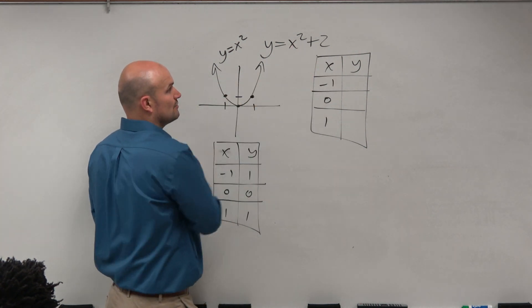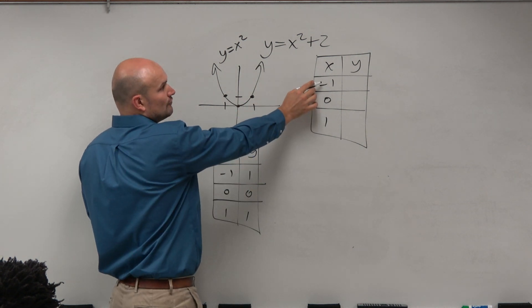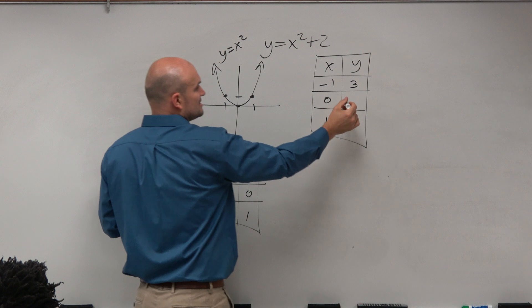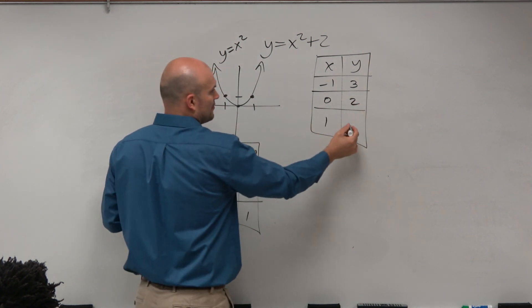But when I plug in the table for x squared plus 2, so negative 1 squared is 1 plus 2 is 3. 0 squared plus 2 is 2, and 1 squared plus 2 is 3.